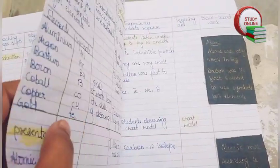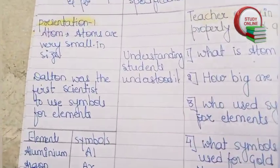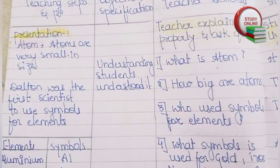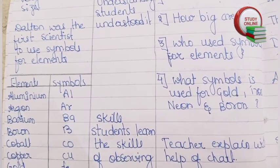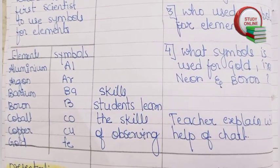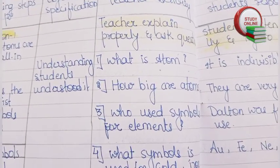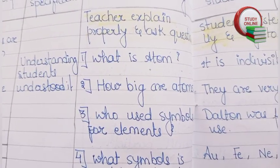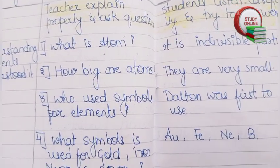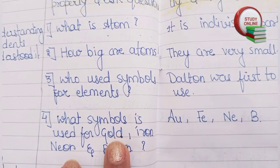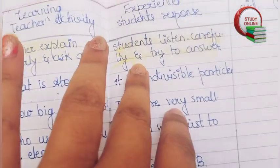Here you can see the overall look of the lesson plan. In Presentation One, the teacher has to explain atoms, and also teach elements and symbols to students. After explaining properly, the teacher has to ask questions such as: what is an atom, how big are atoms, who introduced the symbol for elements, and what are the symbols — like this.